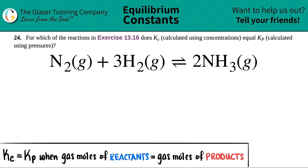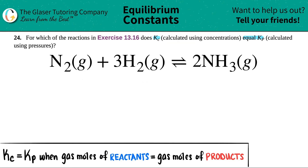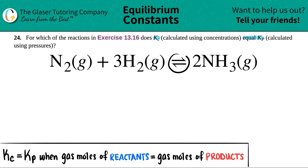Number 24: for which of the reactions in exercise 13.16 does Kc, calculated using concentrations, equal Kp, calculated using pressures? We have to figure out if, for the equation N2 gas plus 3H2 gas coming to equilibrium with 2NH3 gas, the Kc is equal to Kp.